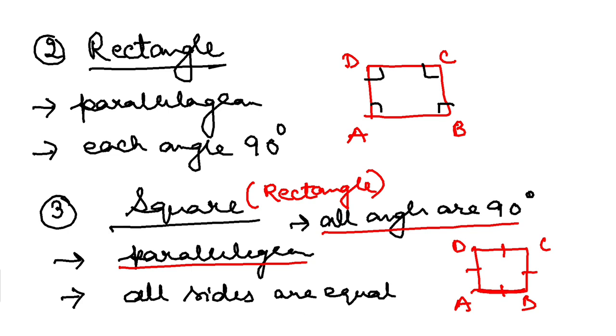So we will discuss the types of parallelogram. We have to learn the differences between all these three: rhombus, rectangles, and squares in terms of diagonals also. We have discussed the difference in terms of sides and angles, but in terms of diagonals also we have to learn the differences. In the next video, we shall learn that one.